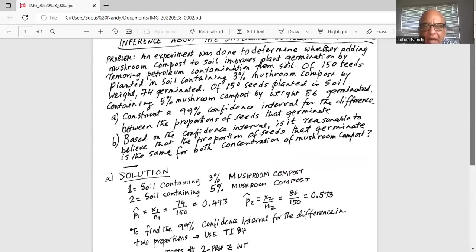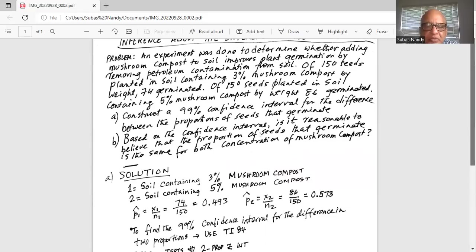Then p1 hat, the sample proportion of seeds that germinate in soil containing three percent mushroom compost, is x1 over n1 which is 74 over 150 or 0.493.